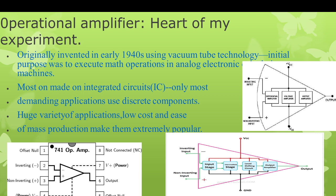Here is information about the operational amplifier. This is the primary LM741 op-amp design. It has eight pins: pin 1 is offset null, pin 2 is inverting input, pin 3 is non-inverting input, pin 4 is negative power supply, pin 5 is offset null, pin 6 is output, pin 7 is positive power supply, and pin 8 is not connected. You can place this IC on a breadboard and connect wires to these points.